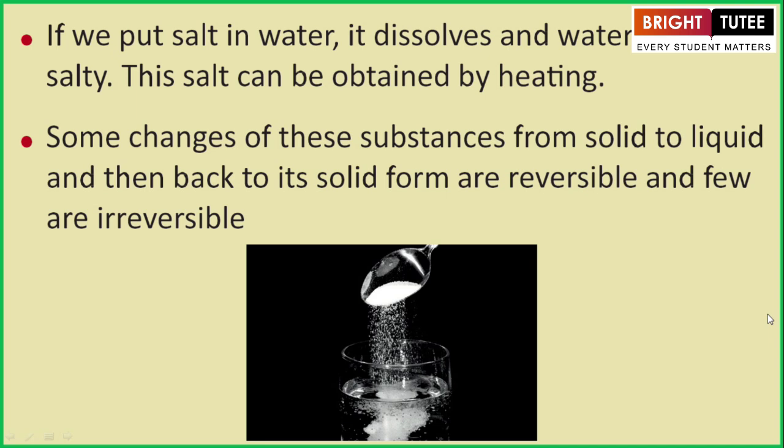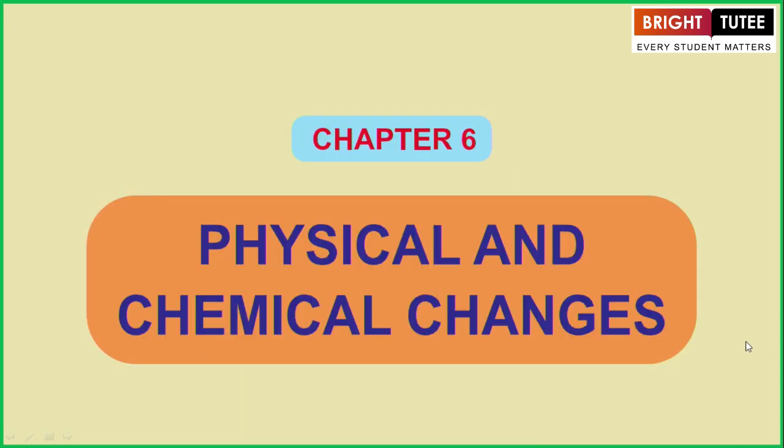So have you got any idea what we are going to study? We are going to study Chapter 6: Physical and Chemical Changes — what kind of changes happen from liquid form to gaseous form, from gaseous to solid form, or vice versa. That is what we are going to study in this chapter.